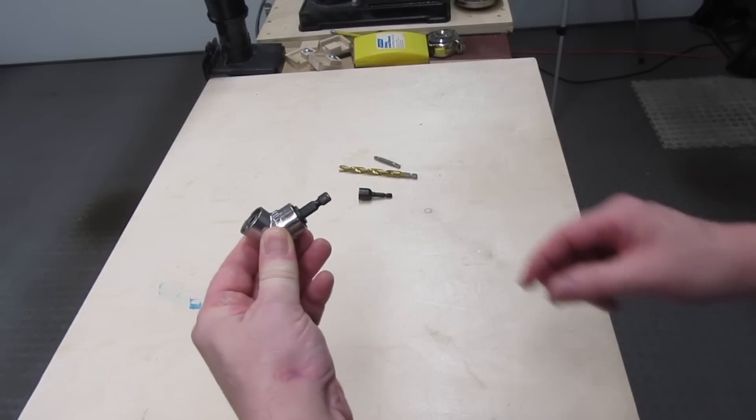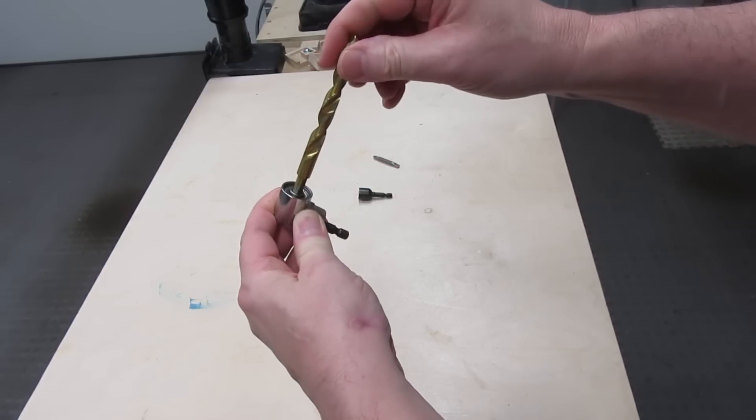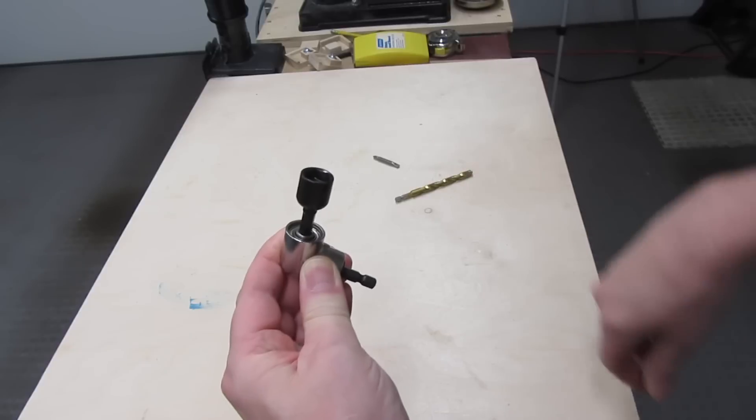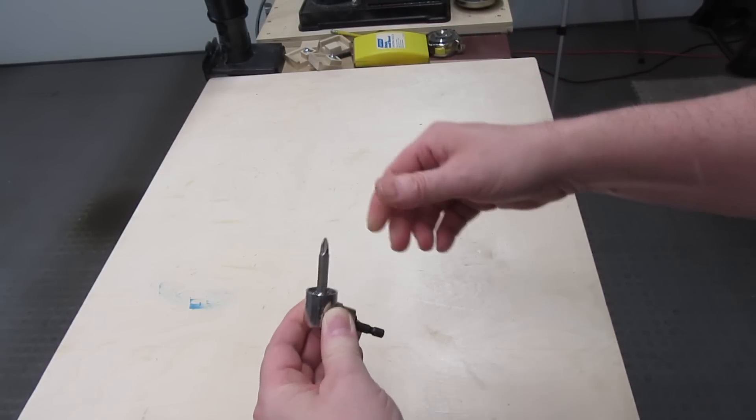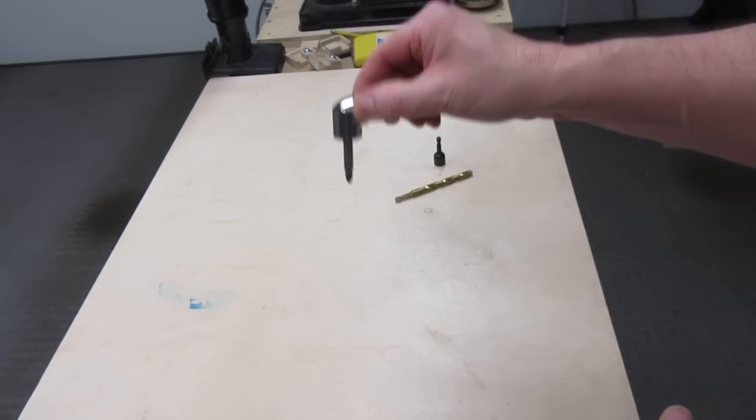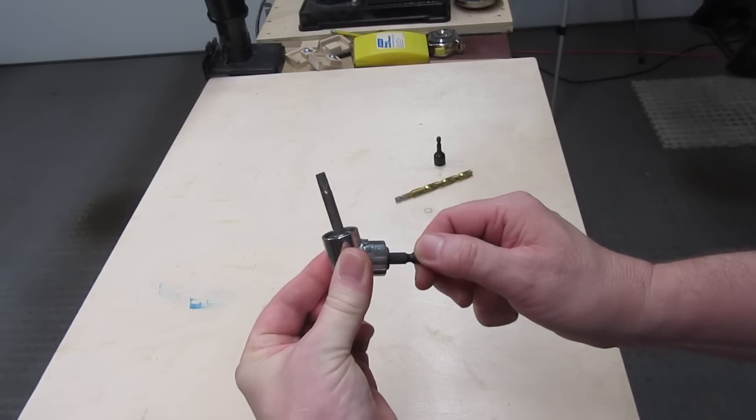It has a quarter inch hex shaft on one end, and it accepts a quarter inch hex shaft in the other. Any kind of hex shaft. It's magnetic so it holds the shaft once you insert it. Turn this shaft and it turns the other shaft.